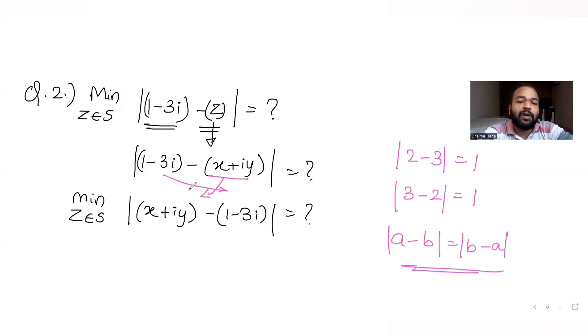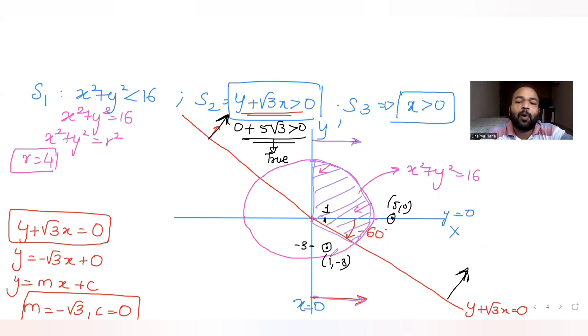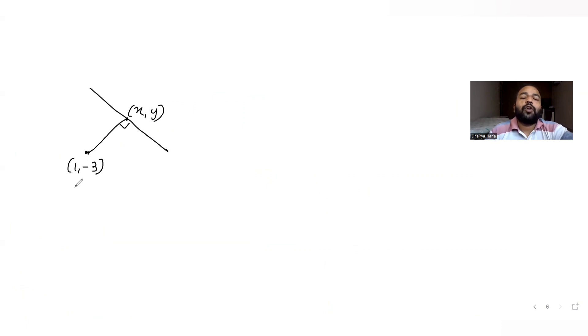So I put x + iy first and then subtract (1 minus 3i). Now if I try to plot these regions, the point (1, -3) will be somewhere here on the complex plane. We have to find the minimum distance of the complex number (x, y) from this point. We already know that the minimum distance from a point to a line is the perpendicular distance. So I want to find the perpendicular distance from point (1, -3) to the line on which x + iy lies.